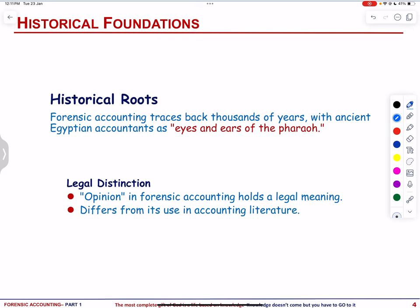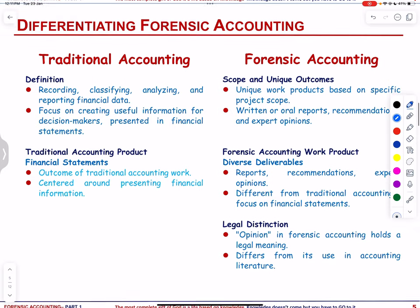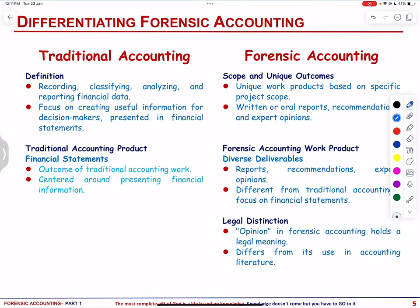Let us talk about forensic accounting and how it is different from traditional accounting. Traditional accounting involves the recording, classification, analysis, and reporting of financial data to create useful information for decision makers, typically presented in financial statements. The work product of traditional accountants is centered around these financial statements. Forensic accounting, in contrast, produces unique work products based on the scope of specific projects. The outcome often includes written or oral reports, recommendations, and expert opinions, especially when testifying.